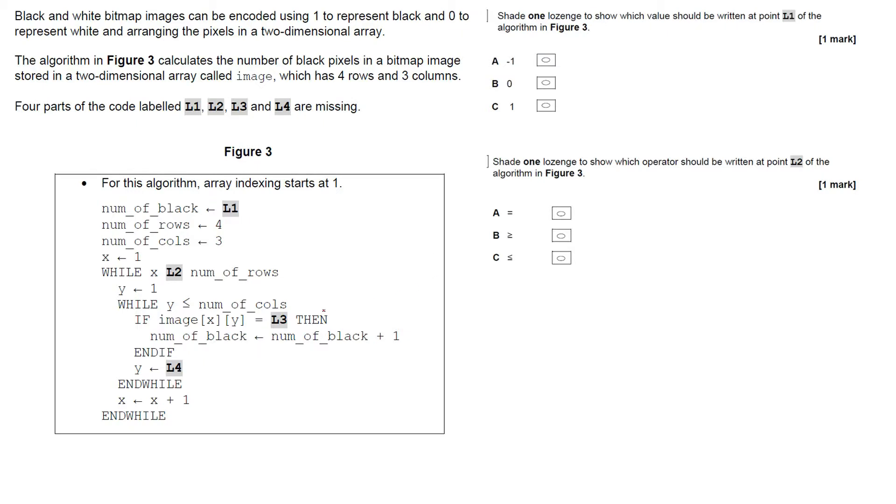This is 3.2.3 Arithmetic Operations in a Programming Language. Our question: Black and white bitmap images can be encoded using 1 to represent black and 0 to represent white, arranging the pixels in a two-dimensional array. The algorithm in Figure 3 calculates the number of black pixels in a bitmap image stored in a two-dimensional array called image, which has four rows and three columns. Four parts of the code labeled 1, 2, 3, and 4 are missing.